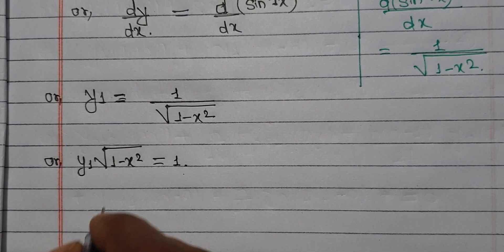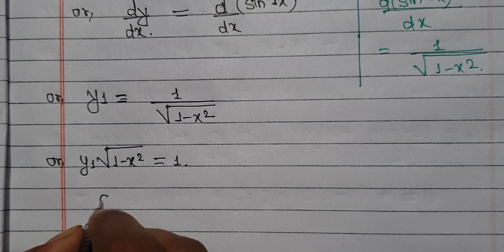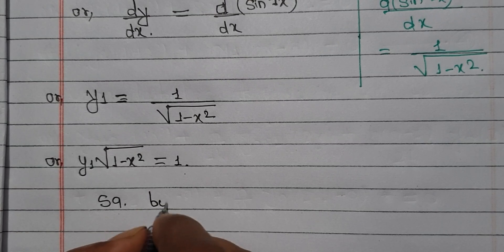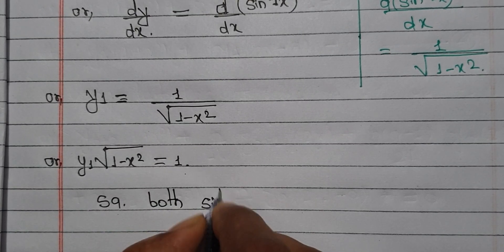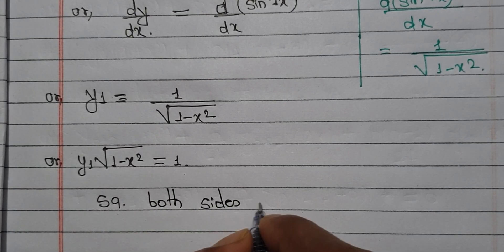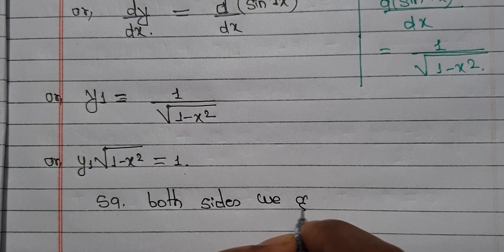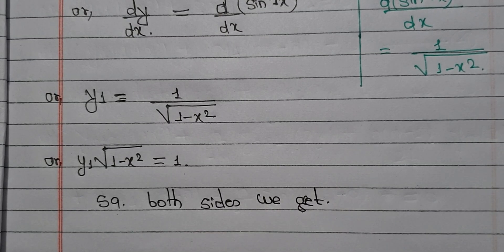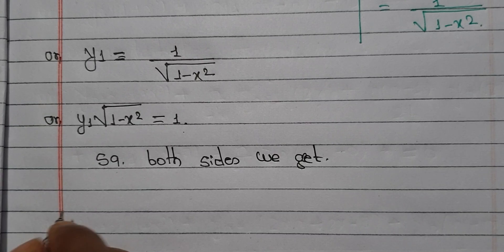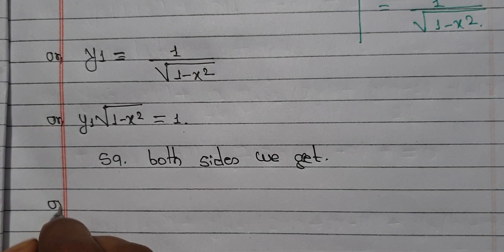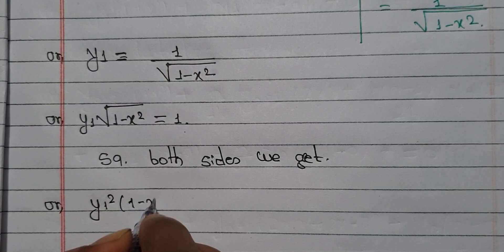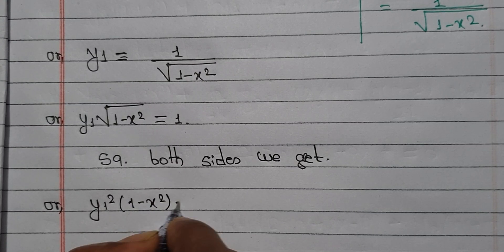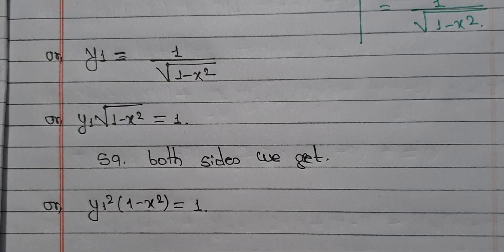Since there is a root, we will remove it by calculation. Squaring both sides — squaring both sides, we get: the root goes away and we get y₁ squared times (1 minus x squared) which is equal to 1.